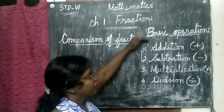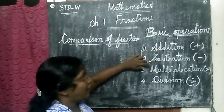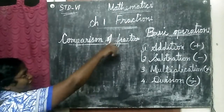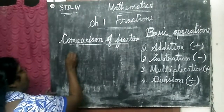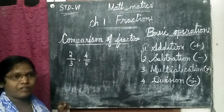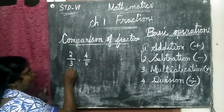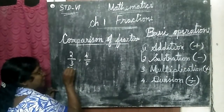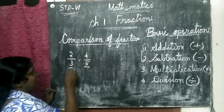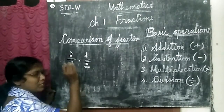Children, we have four basic operations: addition, subtraction, multiplication, division. To do addition and subtraction in fractions, we must compare the given fractions. So, comparison of fractions: suppose two different fractions are given — two by three and four by five. We must compare the denominators; first we have to see whether the denominators are same or not. Three and five are not same.